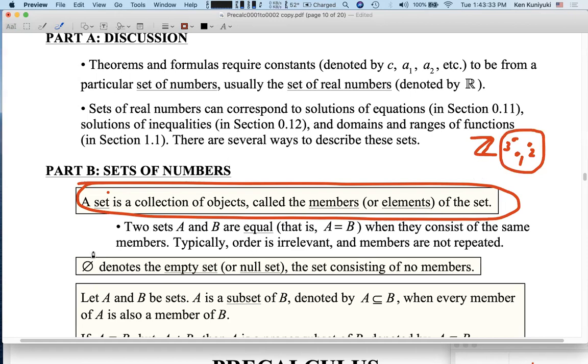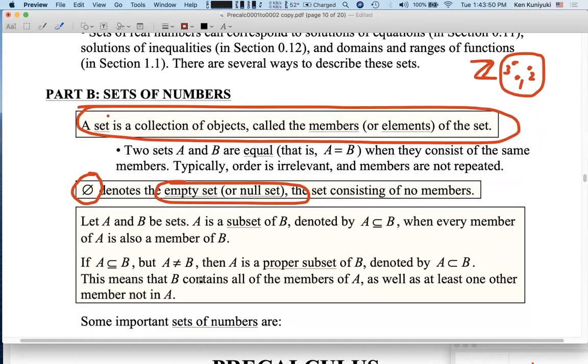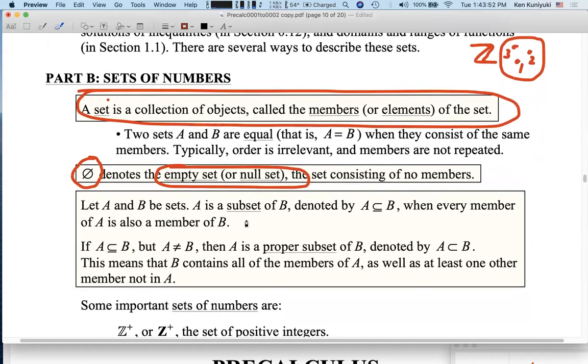This is also a set. This here denotes the empty set, or null set, which is the set consisting of no members. Sometimes, when you solve an equation, there are no real solutions, and the solution set is the empty set, or null set. Later on, I'll talk about the idea of subsets, but let's get right to it. Let's talk about these sets of numbers.